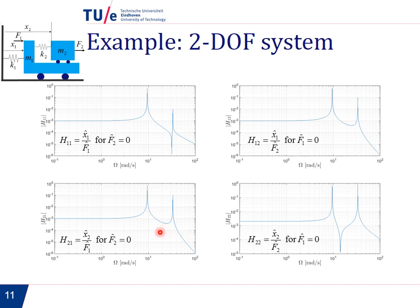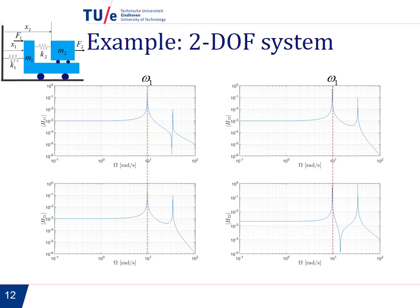As you see, as I said, H21 and H12 are the same. This should always be the case. And then here we have H11 and here we have H22. And the next thing we do is try to understand what we see. So the first obvious thing to see is that the first peak here in both graphs, in all four graphs, corresponds to the first eigenfrequency of the system.